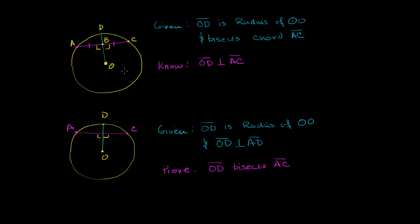What I want to do in this video is go the other way. If we know that OD is a radius and that it is perpendicular to chord AC, I want to prove that it's bisecting it. So we're not assuming it bisects — we're just assuming it's perpendicular. Previously we started with bisection and proved perpendicularity; now we start with perpendicularity and prove bisection.